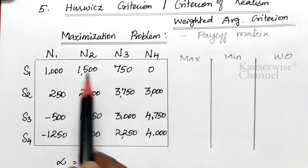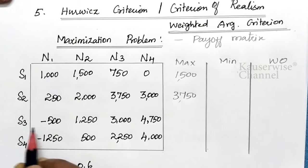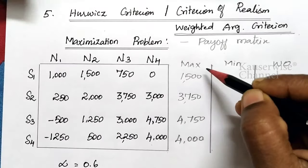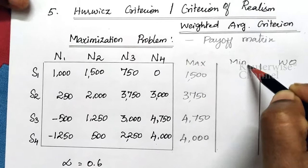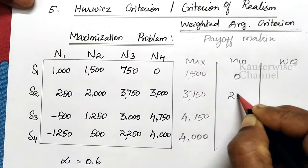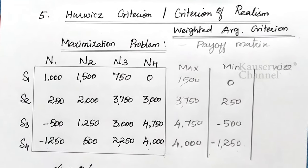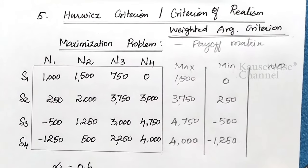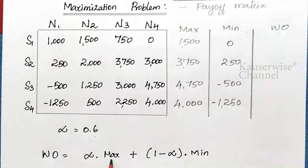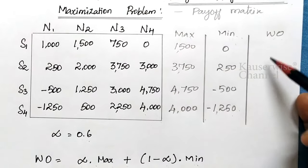Look at the payoff matrix. The given alpha value is 0.6. For maximum values: S1 is 1500, S2 is 3750, S3 is 4750, S4 is 4000. For minimum values: S1 is 0, S2 is 250, S3 is minus 500, S4 is minus 1250. The formula for weighted outcome is: alpha × maximum value + (1 − alpha) × minimum value.